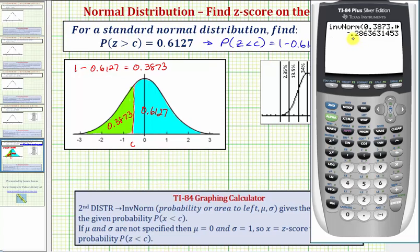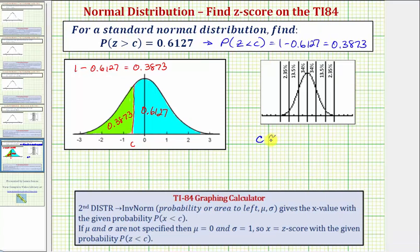Notice how the z-score is between zero and negative one, which we expected. Rounded to four decimal places, c is approximately -0.2864. This means the probability that the z-score is greater than -0.2864 is approximately the given probability of 0.6127.